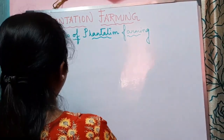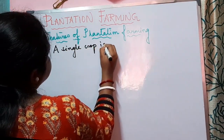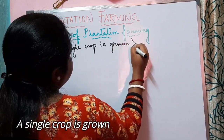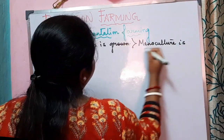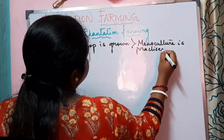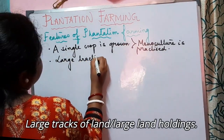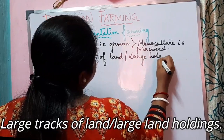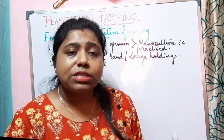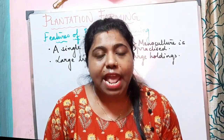In plantation farming, a single crop is grown, so we can say that monoculture is practiced. It requires large tracts of land — large land holdings — for this type of cultivation. Mostly this type of farming is practiced in remote areas where land is available at a cheaper rate and large land holdings are easily available for cultivation.